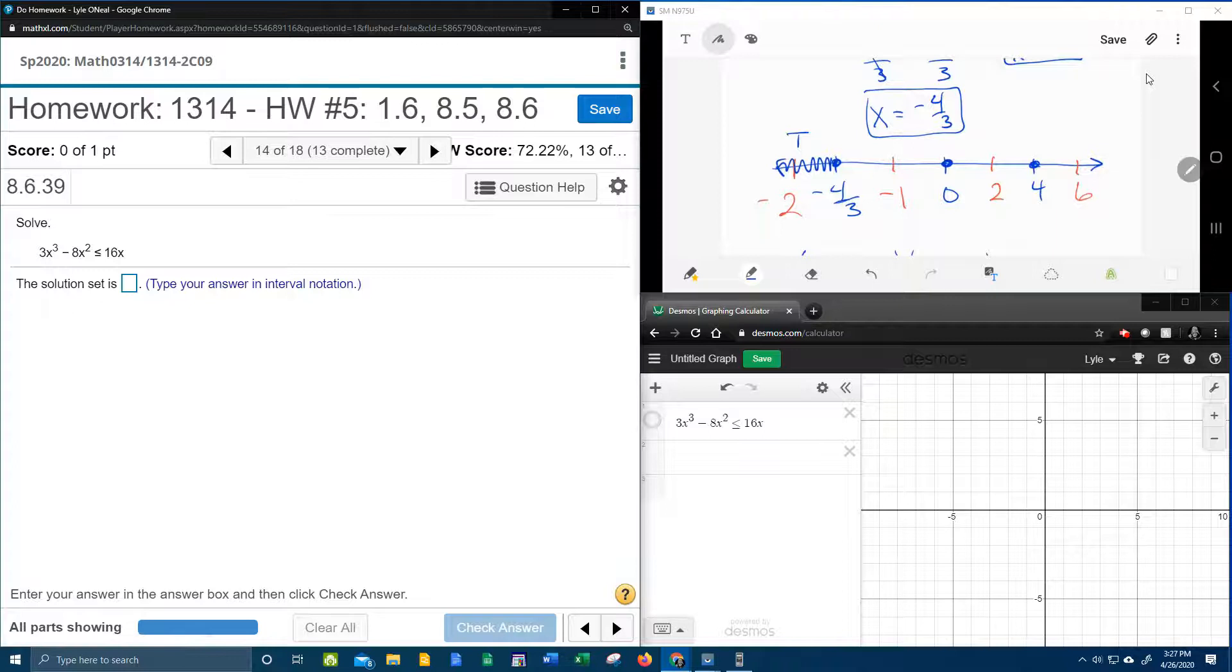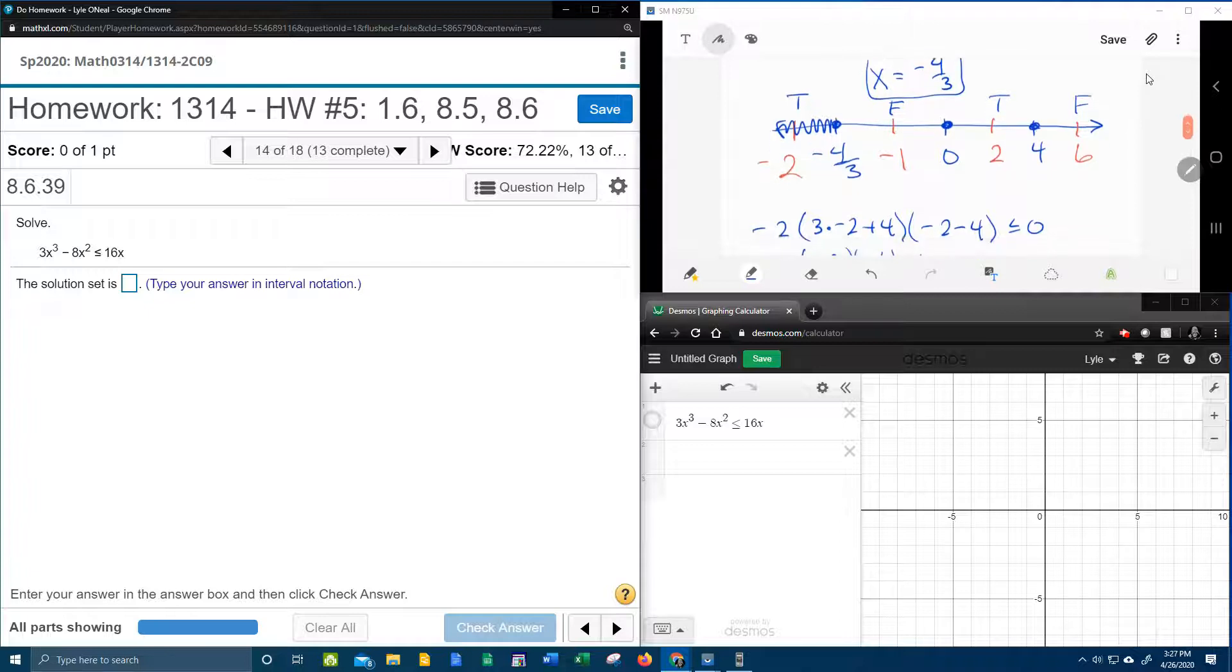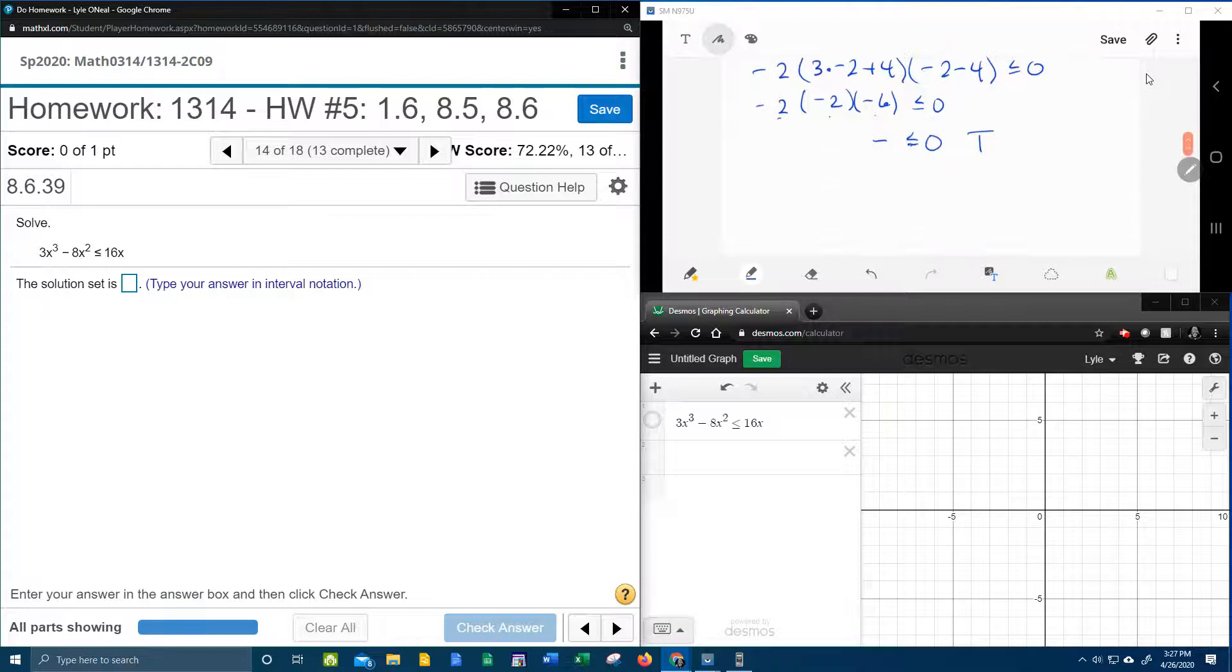And that means that everything in this section is going to shade. Now also remember that I mentioned in the previous problem that these trues, the trues and falses, they normally alternate. So I'm going to go ahead and assume that this negative 1 is going to be false, the 2 is going to be true, and the 6 is going to be false. And so just to prove that I'm probably right here, we're going to go ahead and evaluate negative 1 and see what we get.